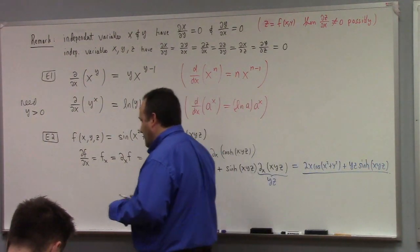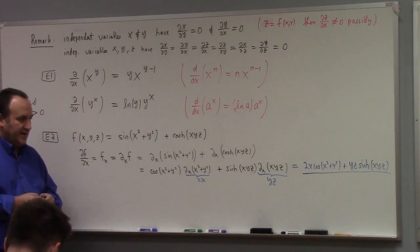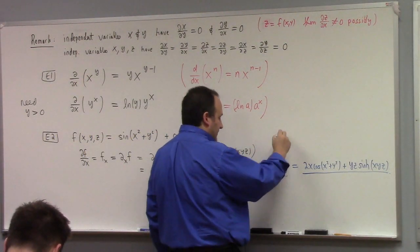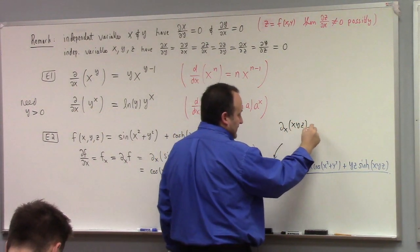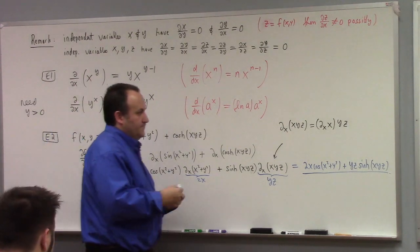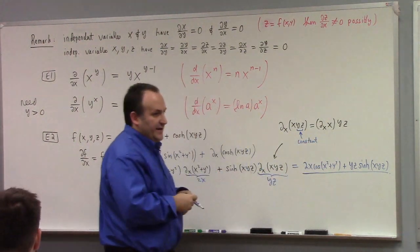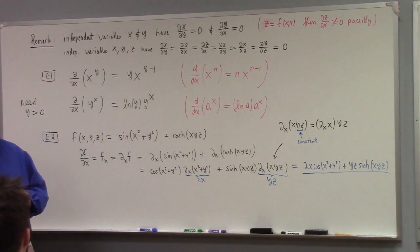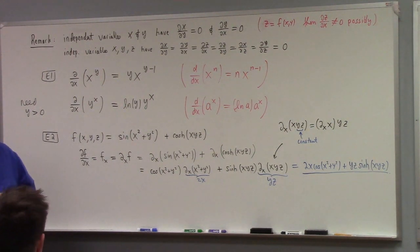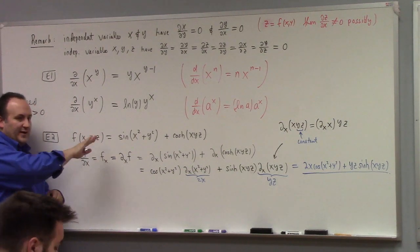If you want to know why the partial of xyz with respect to x is yz: the partial of xyz with respect to x equals the partial of x times yz — since y and z are independent variables, yz is a constant with respect to the x partial derivative, so it pulls out, and the partial of x with respect to x is one. This communicates that x, y, and z are independent variables.